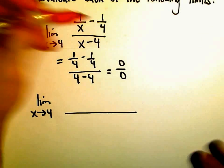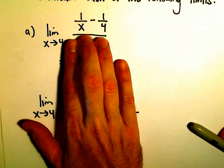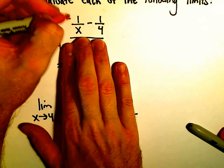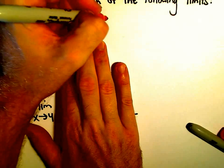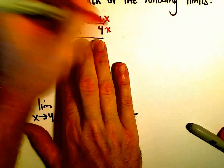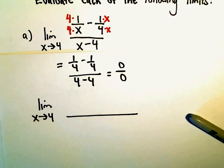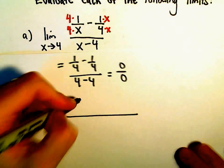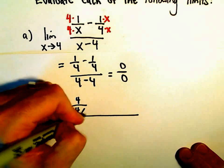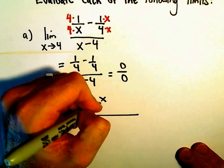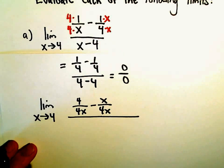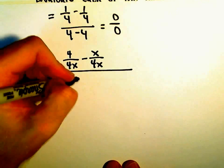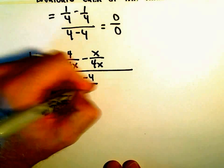So in the numerator, I'm going to get common denominators to group those into a single fraction. I would have to multiply top and bottom of the first fraction by 4. And then I could multiply top and bottom of the second fraction by x. So that would give us 4 over 4x minus x over 4x. And the denominator, we've just got x minus 4. I'm going to write that as x minus 4 all over 1.